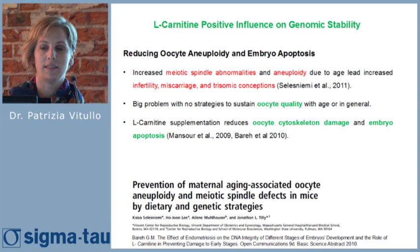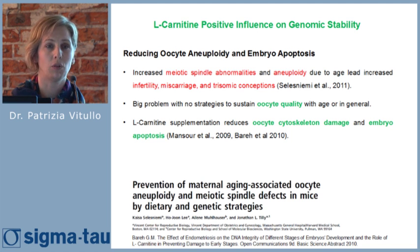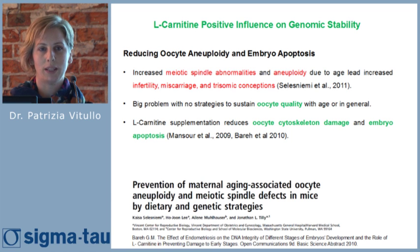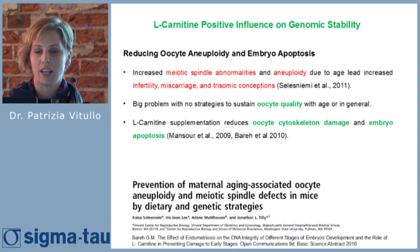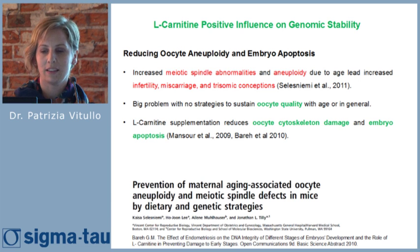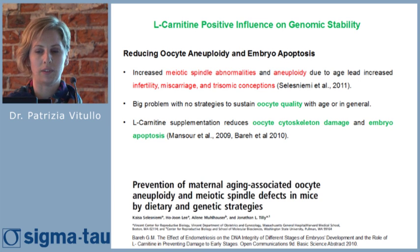There is an increase in meiotic spindle abnormality and aneuploidy due to age, leading to increased infertility, miscarriage, and trisomic conceptions. This is a significant problem because we have no strategy to sustain oocyte quality with age or in general. L-carnitine supplementation has been shown to reduce oocyte cytoskeleton damage and embryo apoptosis.